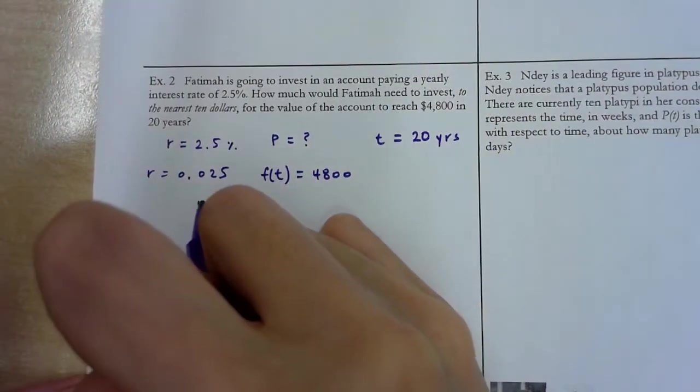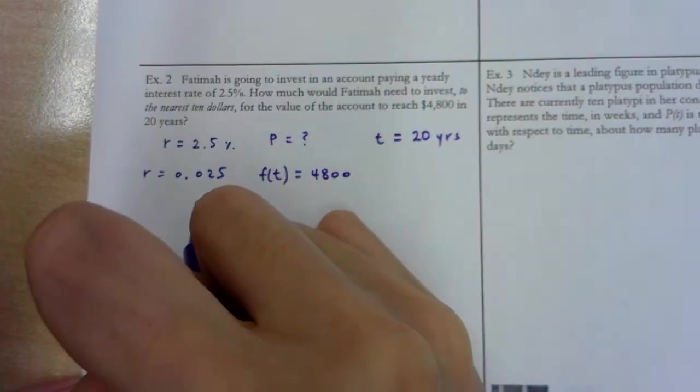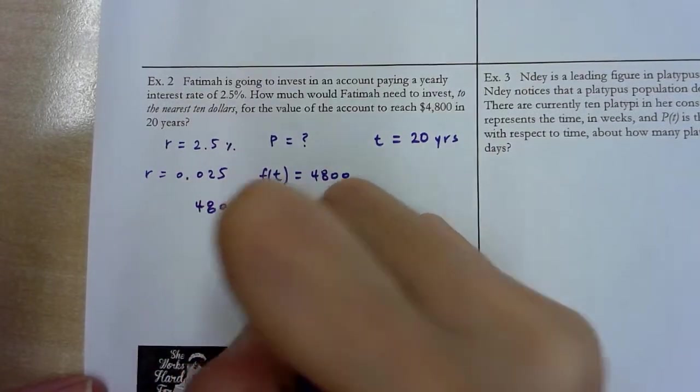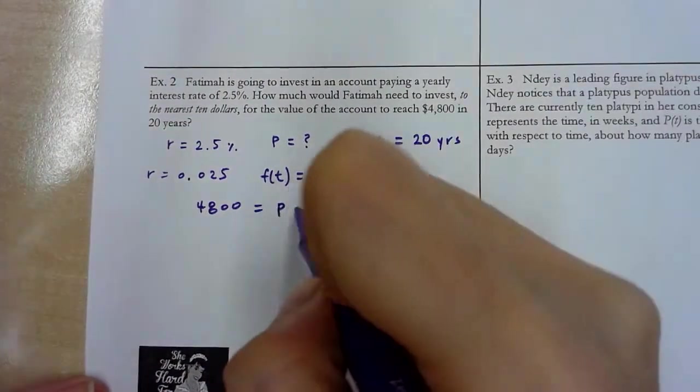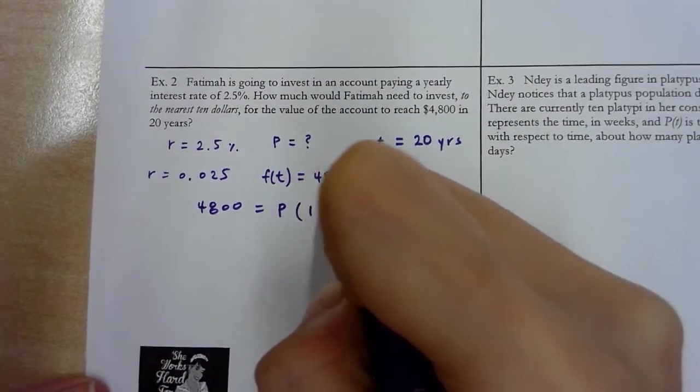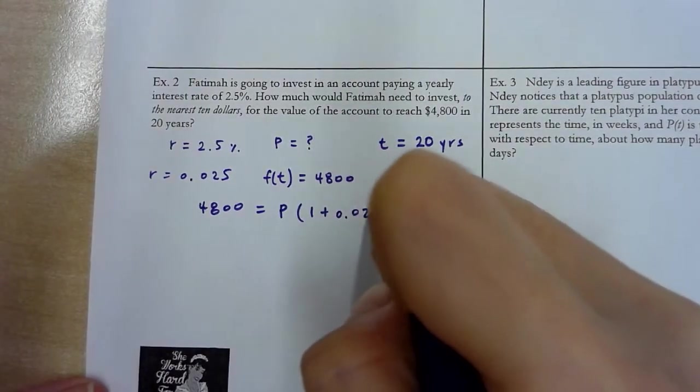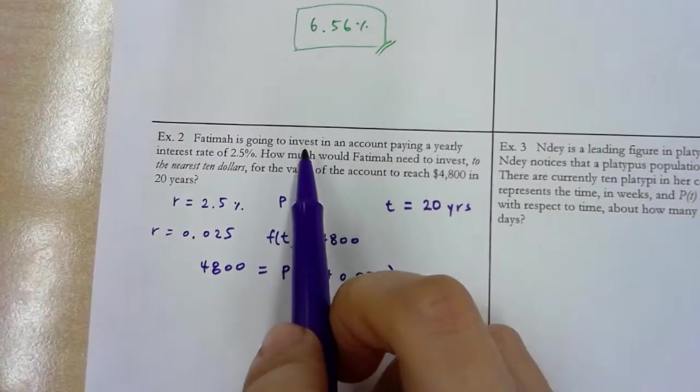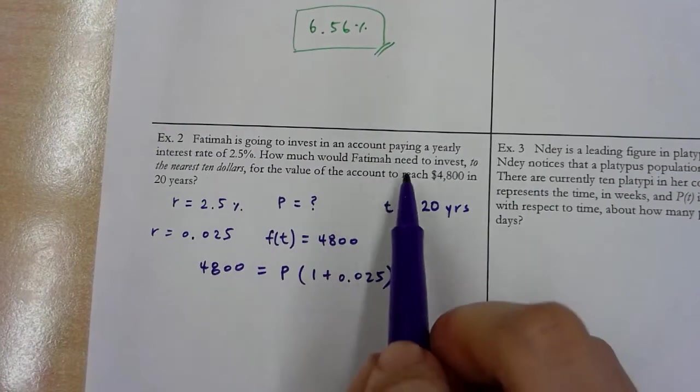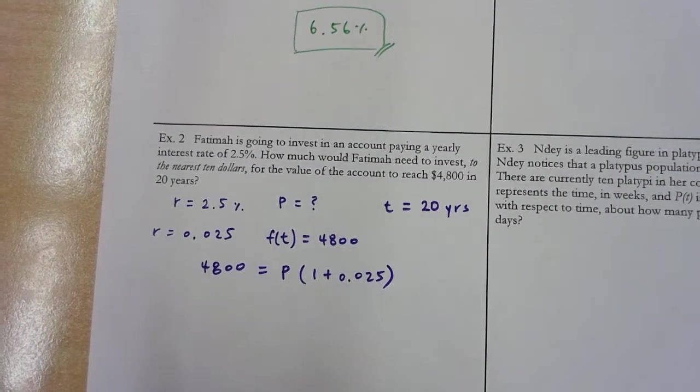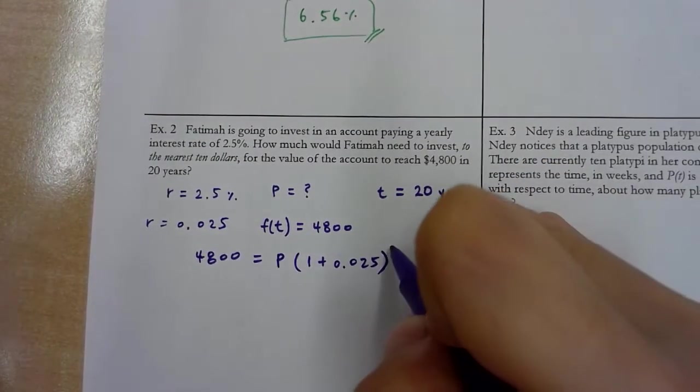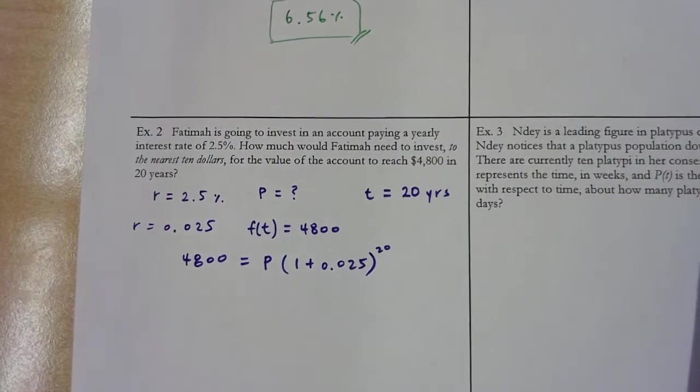Now let's set up the equation. So 4800 = P(1 + 0.025)^20. P is what I don't know. This is again plus because money is getting invested. It's going to grow. We want it to grow.